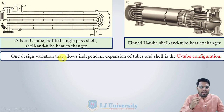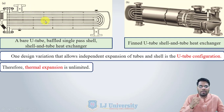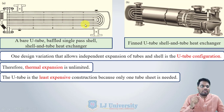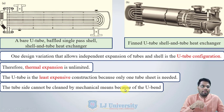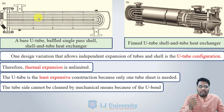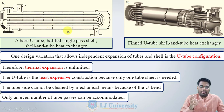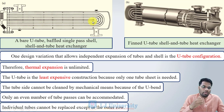One design variation that allows independent expansion of tubes and shell is the U-tube configuration, so thermal expansion is unlimited. The U-tube is the least expensive construction because only one tube sheet is needed to support all the tube bundles. However, the tube side cannot be cleaned by mechanical means because of the U-bend, only an even number of tubes can be attached, and individual tubes cannot be replaced — the whole bundle must be replaced.